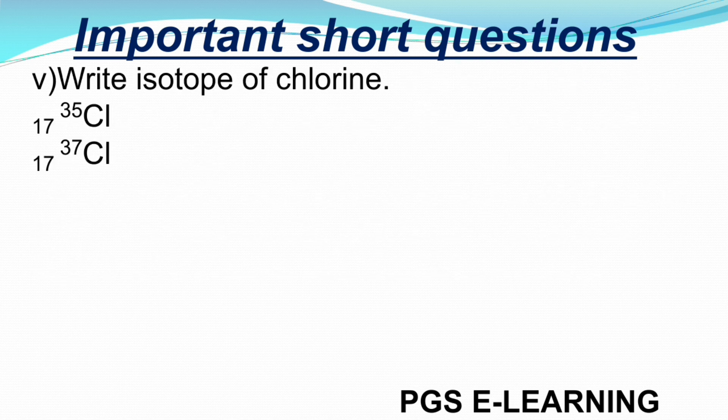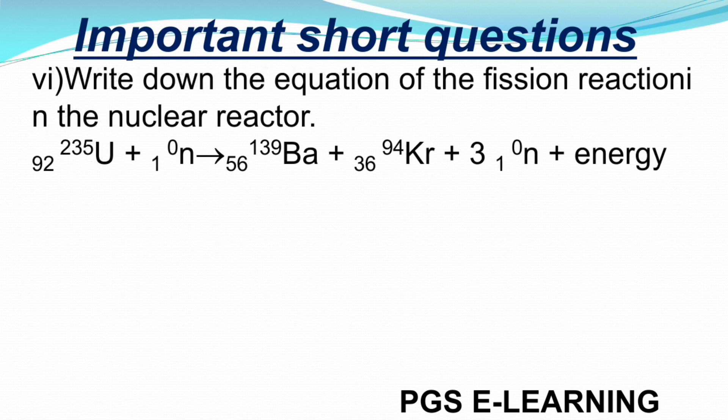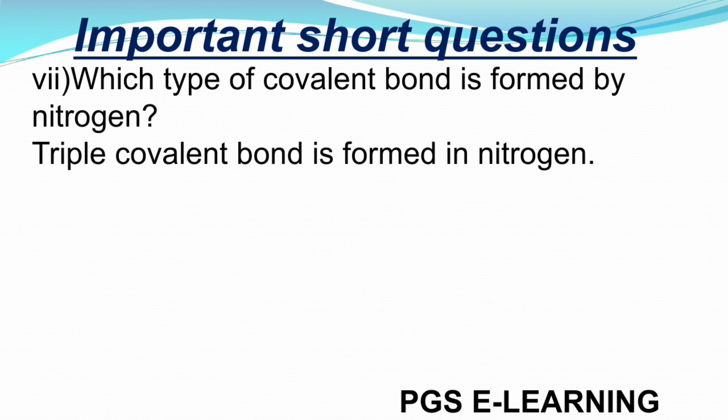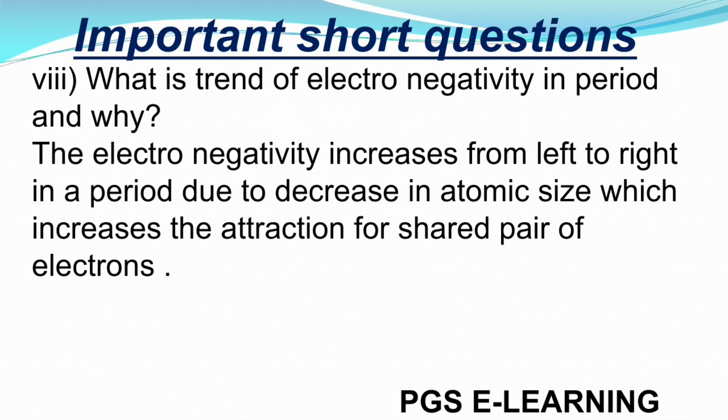Question 5: Write the isotopes of chlorine — Cl-35 and Cl-37. Question 6: Write down the equation of the fission reaction in the nuclear reactor. The equation is as follows. Question 7: Which type of covalent bond is formed by nitrogen? A triple covalent bond is formed in nitrogen. Question 8: What is the trend of electron affinity in a period and why? Electron affinity increases from left to right in a period due to the increase in nuclear charge, which increases attraction for the shared pair of electrons.